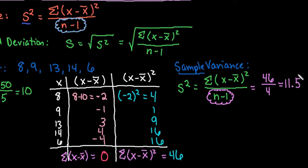If you happen to watch the population standard deviation video, you found that this was 9.2. The sample variance always ends up being slightly larger than the population variance.